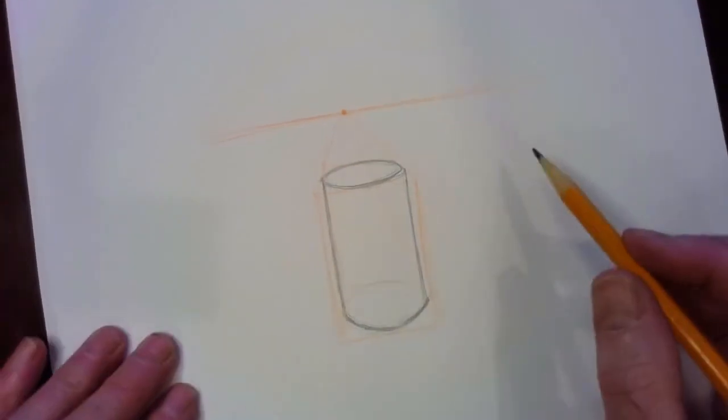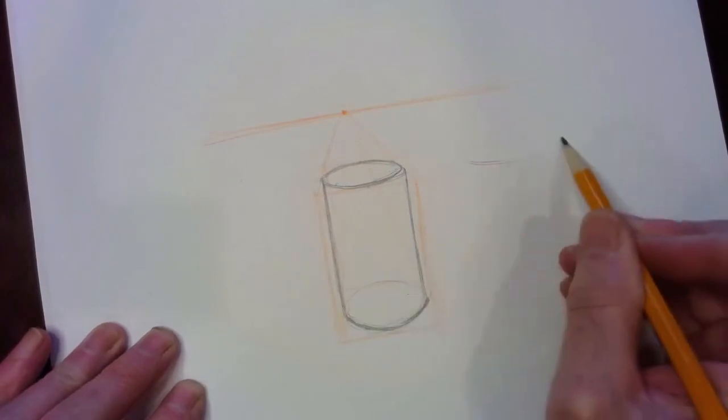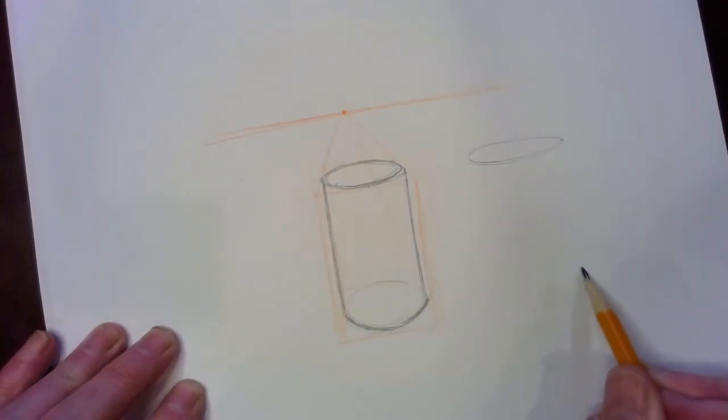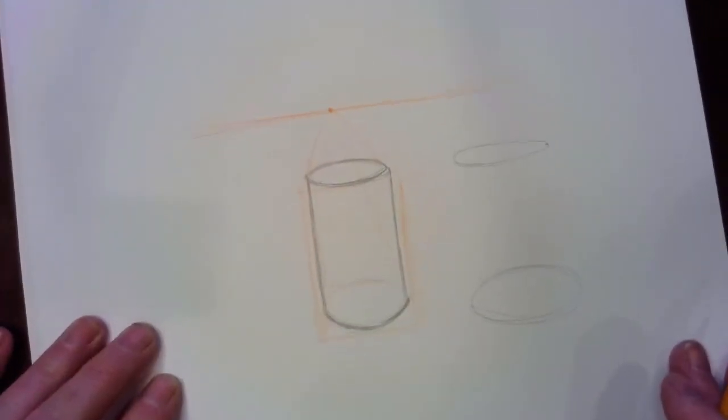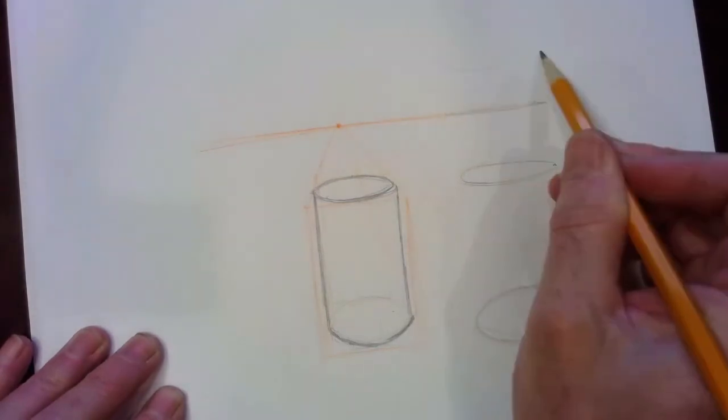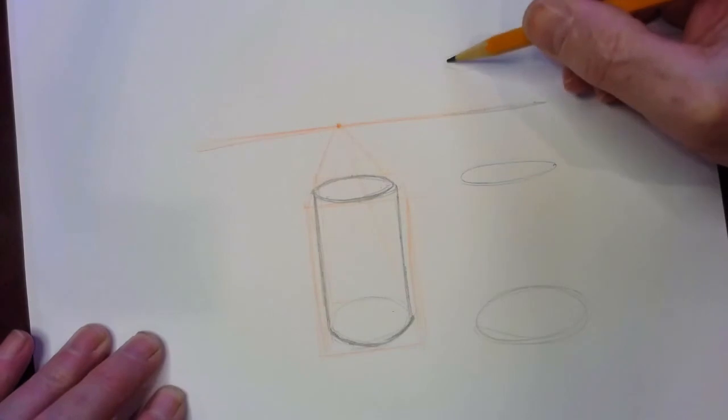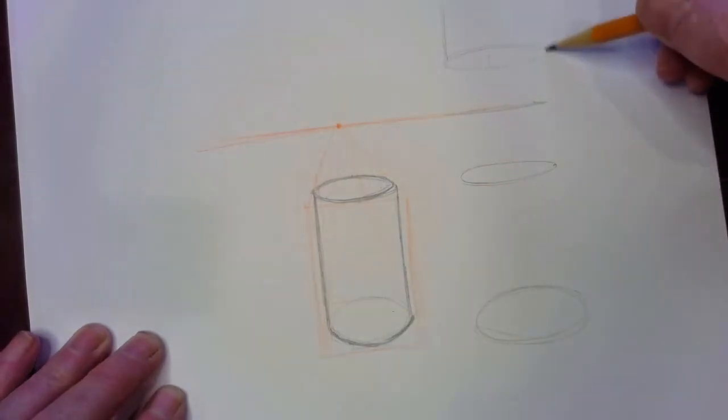Now one of the things to recognize is we're below the horizon line, so the oval is something like that. And as you get further away from the horizon line it gets larger. At the horizon line it's just flat, and then when you're above the horizon line you're seeing the bottom of the cylinder.